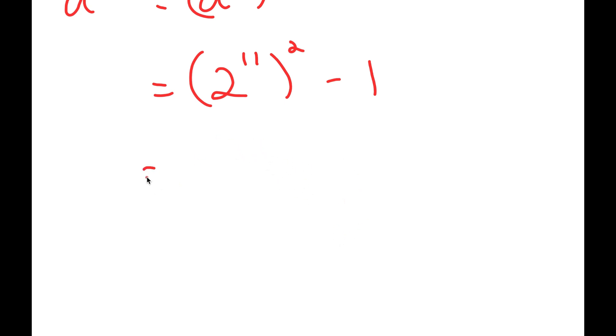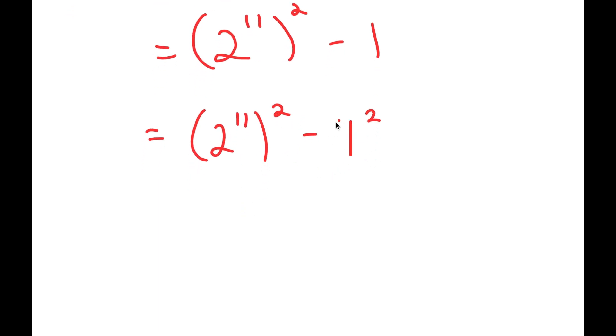Now, 1 is the same thing as 1 squared, so now I have 2 to the power of 11 to the power of 2 minus 1 squared. The reason I did that and rewrote 1 as 1 squared is because now I can use the property a squared minus b squared is equal to a plus b times a minus b.